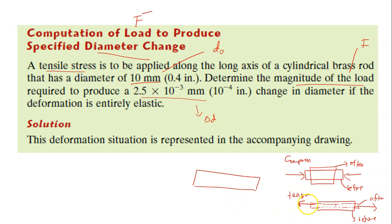Tensile stress means tension stress, so it is pulled. D0 is 10 mm, and delta D is 2.5 × 10⁻³ mm.